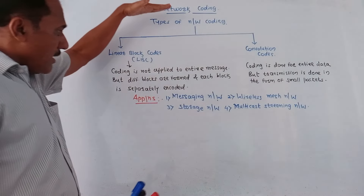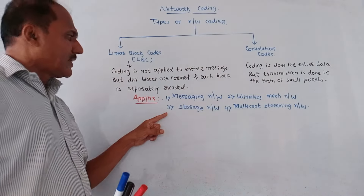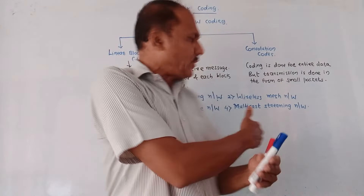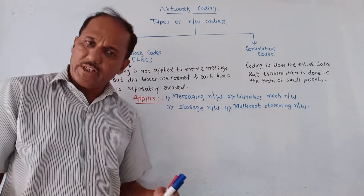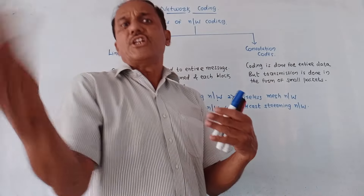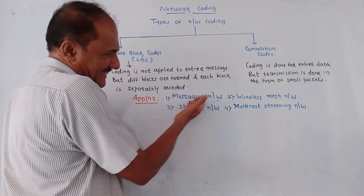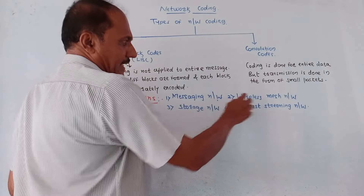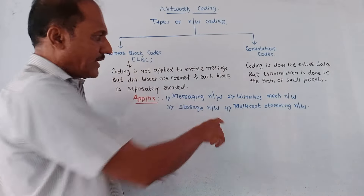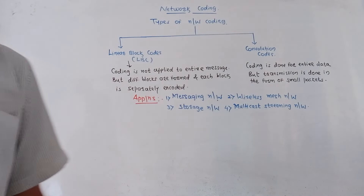Now, what are the applications of network coding? Network coding is used where there is one source and many destinations. A few applications include messaging networks, wireless mesh networks, storage networks, and multicast streaming networks.